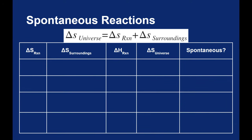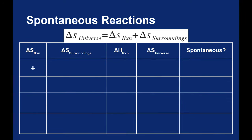For a reaction to be spontaneous, the delta S of the universe must be positive — that's the second law of thermodynamics. Let's take a look at this chart. Let's say I have a reaction that is becoming more entropic — it's getting more random and has a positive delta S value — and the surroundings are also increasing in entropy, meaning the reaction is exothermic with a negative delta H. Well, if the delta S of the reaction is positive and the delta S of the surroundings is positive, the delta S of the universe must also be positive. According to the second law of thermodynamics, these reactions will be spontaneous — they will happen on their own.